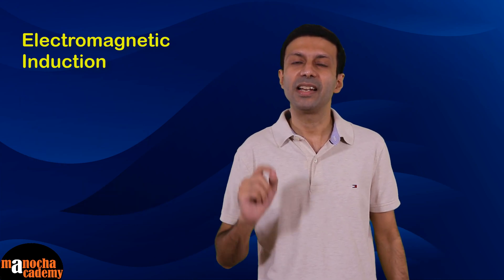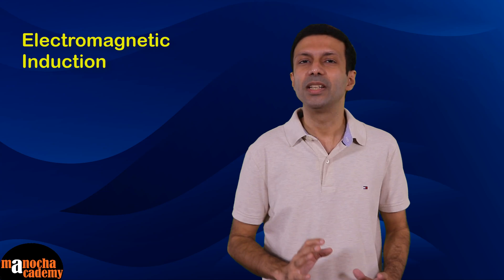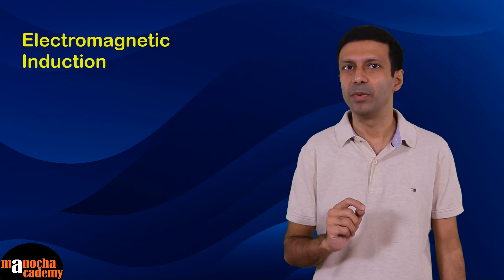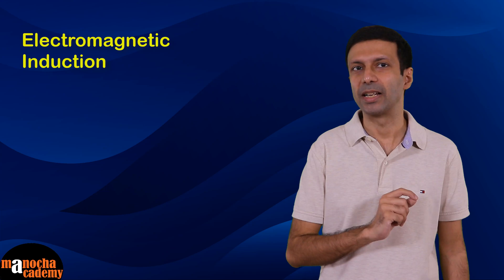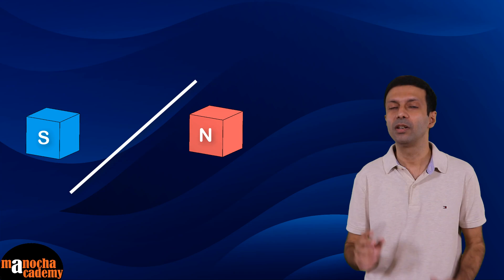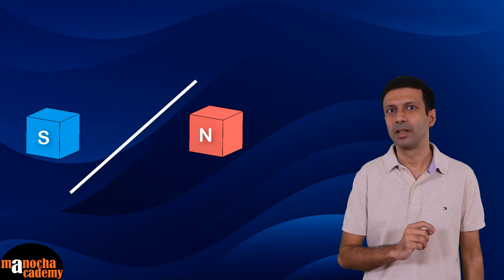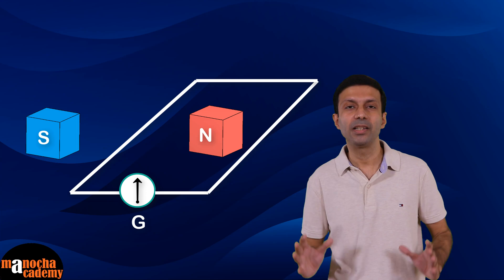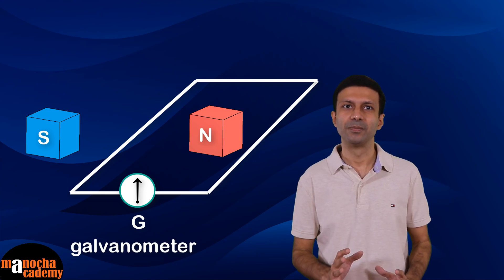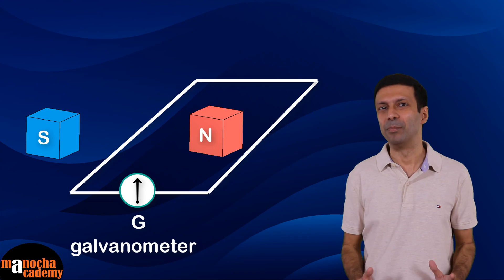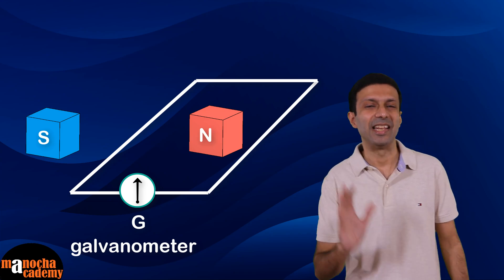Let's understand electromagnetic induction with a simple experiment. We'll use a horseshoe magnet. A straight wire is held between the north and south poles of the horseshoe magnet. The two ends of the wire are connected to an instrument called a galvanometer. You might have seen a galvanometer in your lab — it looks something like this.